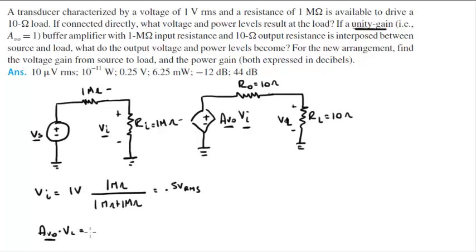AVO times VI is still equal to 0.5 volts RMS. So VL is a voltage divider of 0.5 volts RMS times 10 ohms over 10 ohms plus 10 ohms,